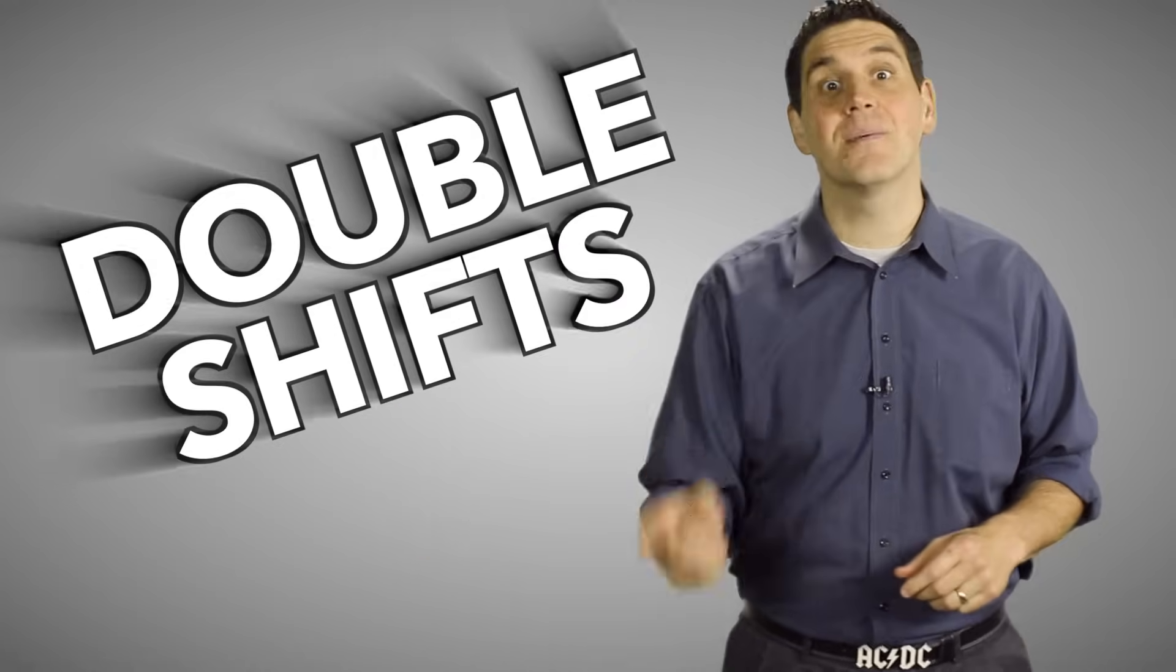Hey, it's Jacob Clifford. Welcome to ACDC Econ. Today is Technical Tuesday when I go over specific topics to help you in your Econ class. Right now I'm going to talk about double shifts in demand and supply.